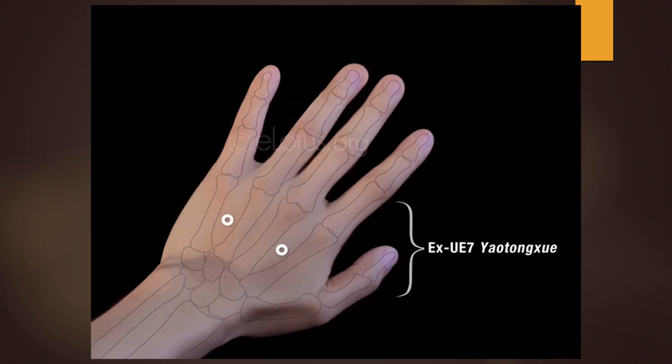The extra point Yao Tongshui is used for pain that is unilateral and in the middle part of the back, higher than the level of the umbilicus. This extra point is located on the dorsum of the hand, midway between the transverse wrist crease and the metacarpophalangeal joint, between the 2nd and 3rd metacarpal bones and between the 4th and 5th metacarpal bones — four points in all on both hands. This is a very good point for acute lumbar sprain and low back pain.